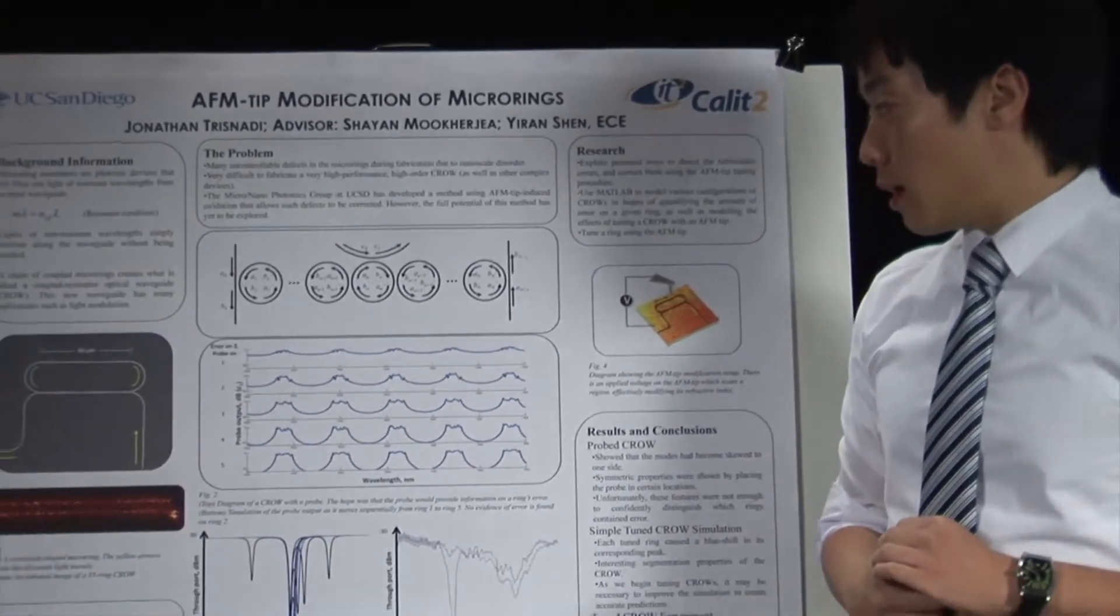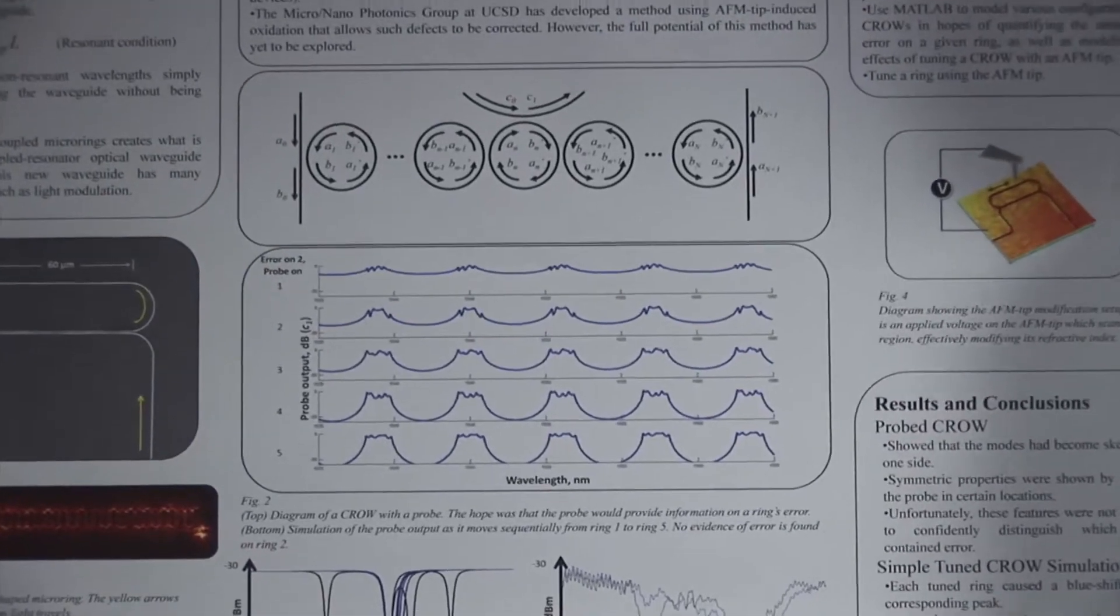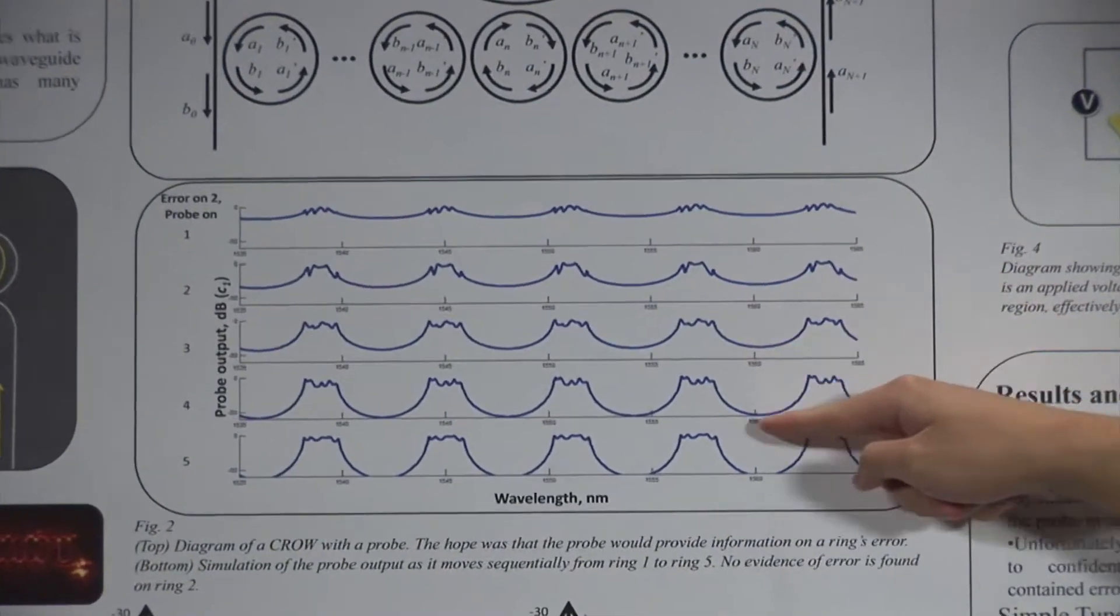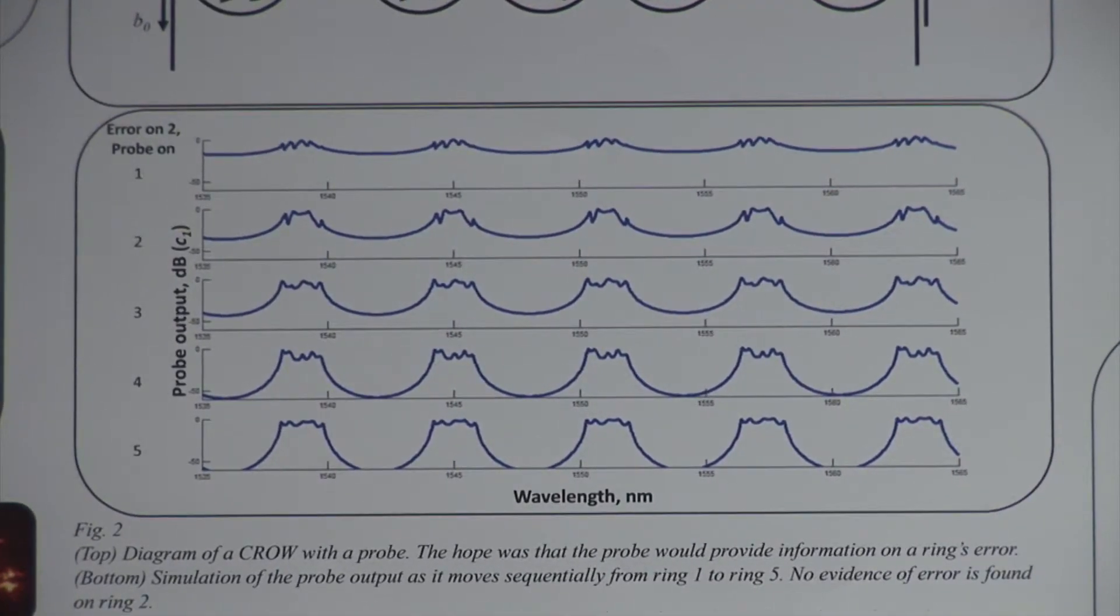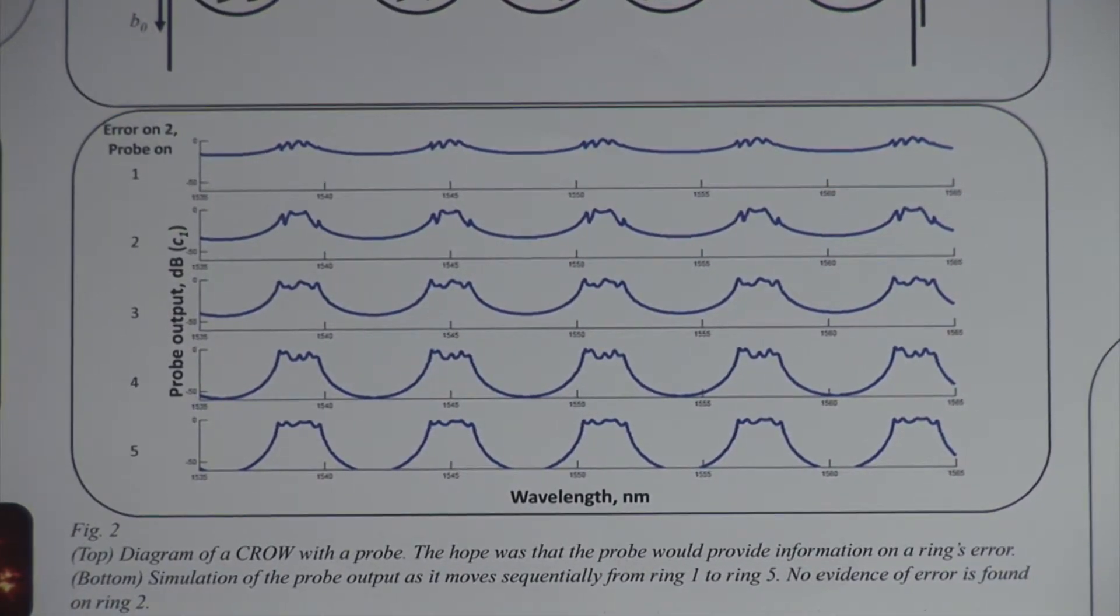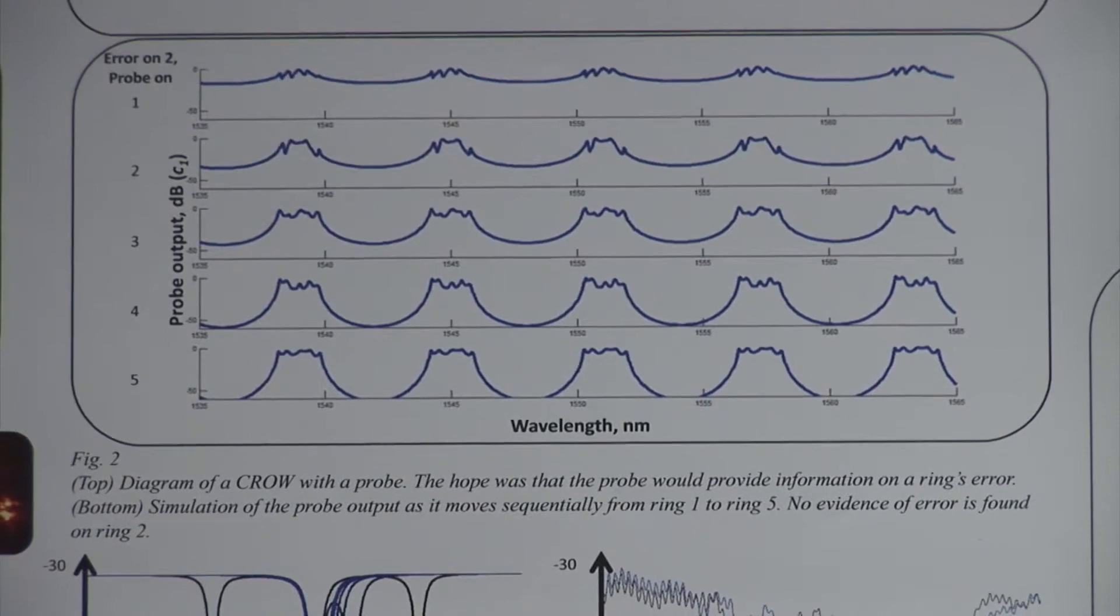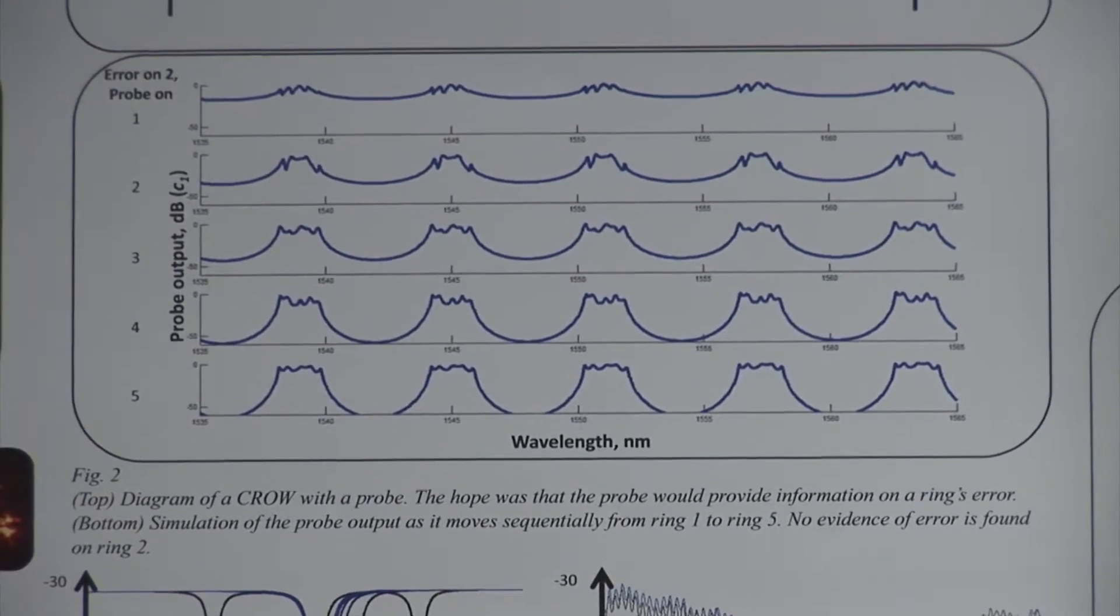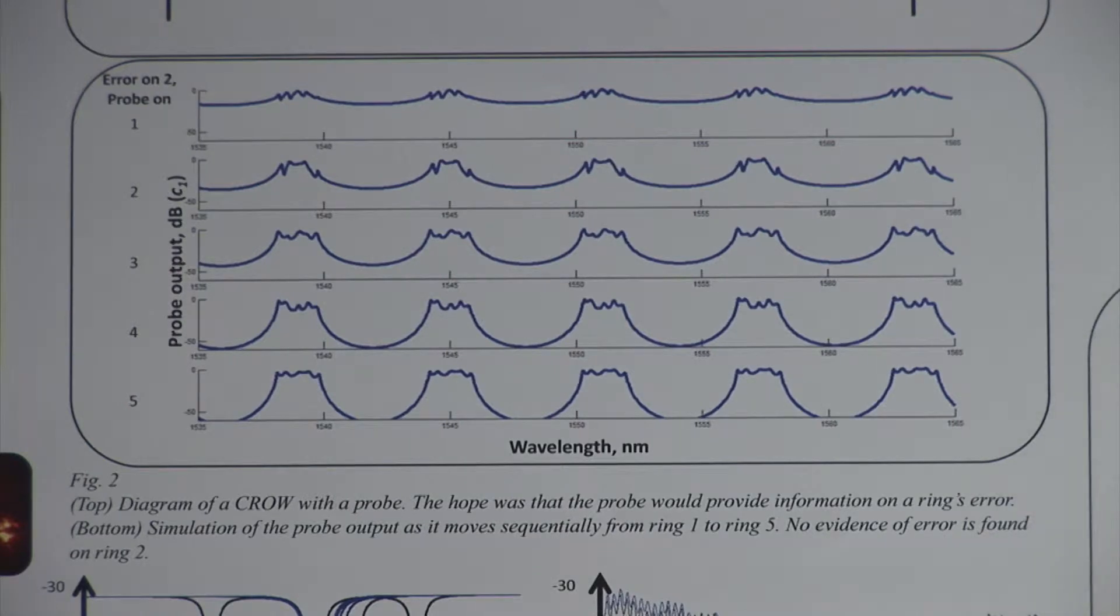So the probe output shows some interesting characteristics. We see that the gaps get deeper and deeper as we go along the CROW, which is reasonable to expect. And we also see some symmetric properties about the middle of the CROW. So ring one and ring five in a five ring CROW might look the same. Ring two and ring four might look the same.